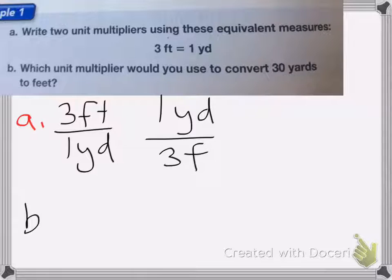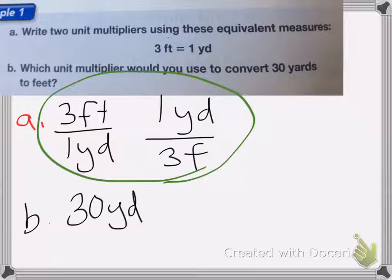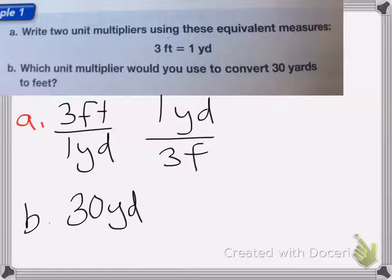Now if I want to change 30 yards into feet, I need to multiply it by one of these unit multipliers. I need to do the one that will get rid of this label because I want it to be feet, not yards.